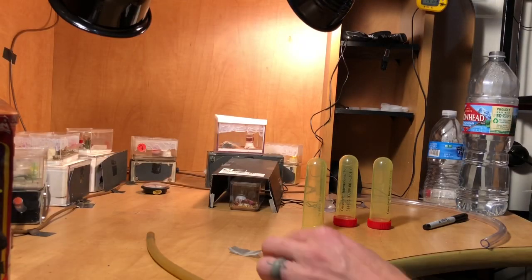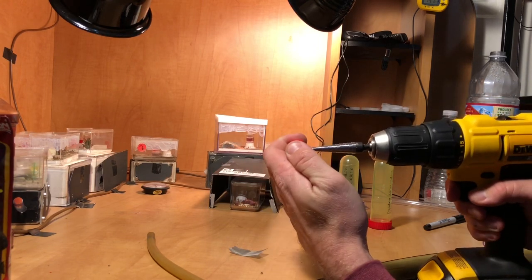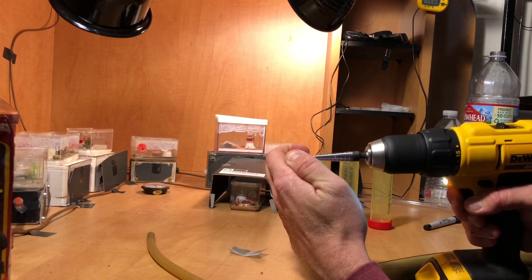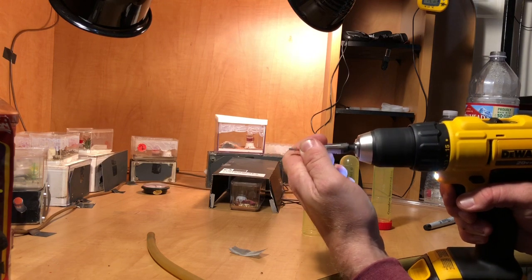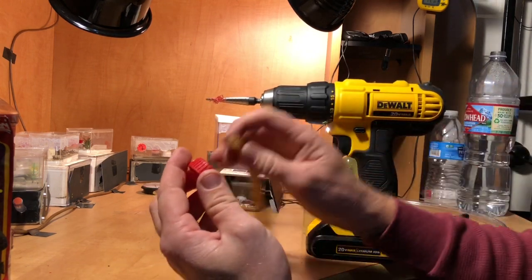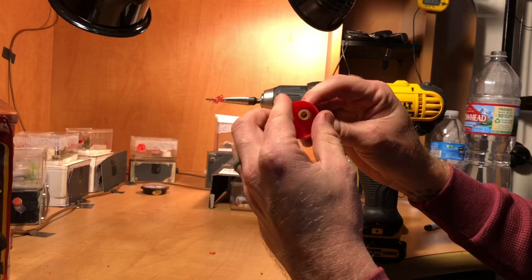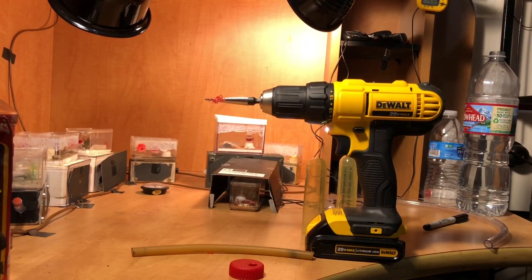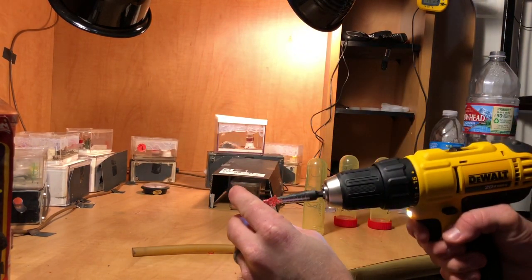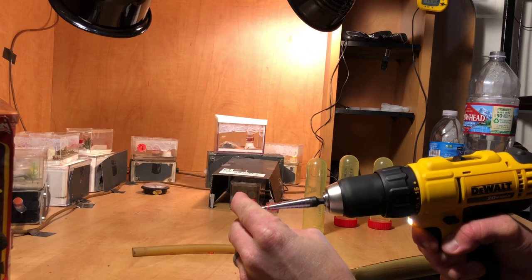Now you'll want to go ahead and drill the holes that you traced into the cap of the test tube. And in this part you will want the tubing to fit into the cap absolutely snug. The snugger everything is, the better your suction will be.